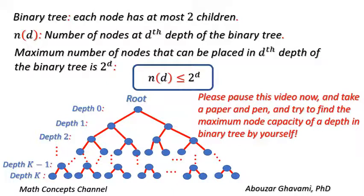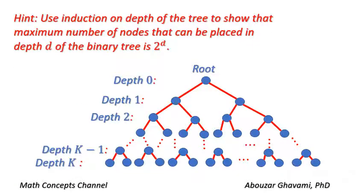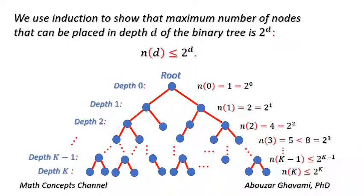Please pause this video now, take a paper and pen, and try to find the maximum node capacity of a depth in a binary tree by yourself. As a hint, use induction on the depth of the tree to show that the maximum number of nodes that can be placed in depth D of the binary tree is two to the power of D. In other words, use induction to show that N of D is less than or equal to two to the power of D.